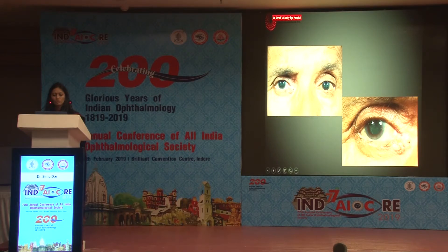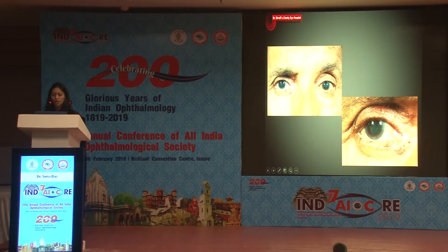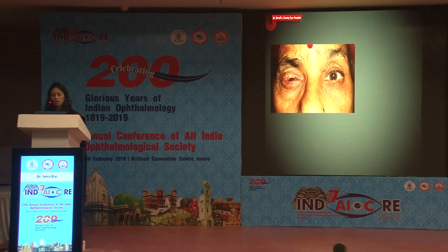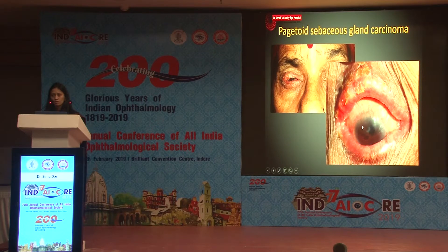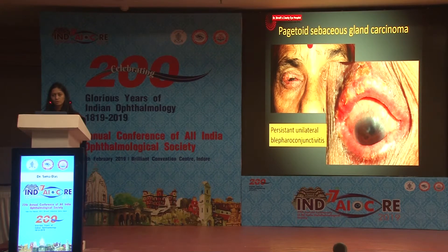Another variant of sebaceous gland carcinoma can look like ulcerative blepharitis of the lid margin. But in this age group, we don't expect a unilateral ulcerative blepharitis. Small yellowish nodules, an elevated area near the medial canthus, loss of eyelashes, and destruction of the lid margin all point toward SGC. A more severe variant presents as blepharoconjunctivitis — the pagetoid variant — with yellowish appearance, diffuse lid margin thickening, loss of eyelashes, and diffuse conjunctival hyperemia. Any persistent unilateral blepharoconjunctivitis not responding to conventional treatment should raise suspicion of pagetoid SGC.